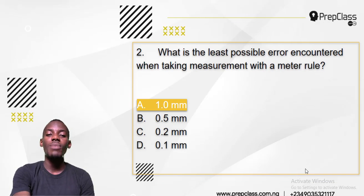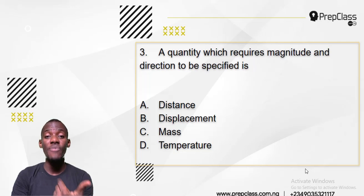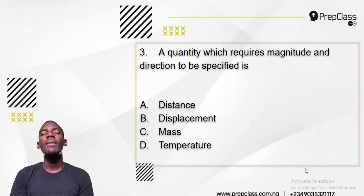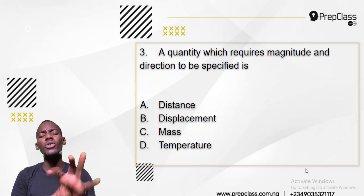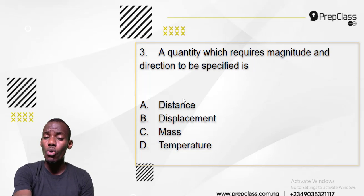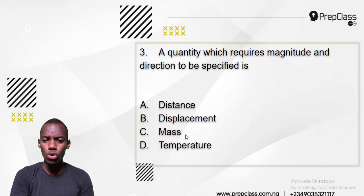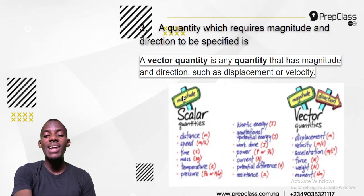Number three: a quantity which requires both magnitude and direction to be specified is what? Any quantity with magnitude and direction is called a vector quantity, while scalar quantities have magnitude or size only. Looking at the options — time, displacement, mass, temperature — which has both magnitude and direction? Displacement is a vector quantity. Mass and temperature are not vectors; they are scalar quantities.